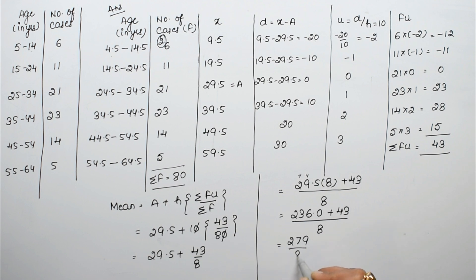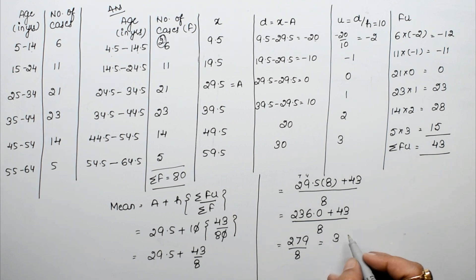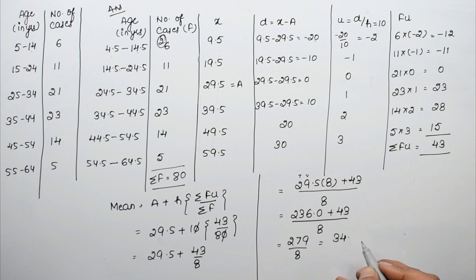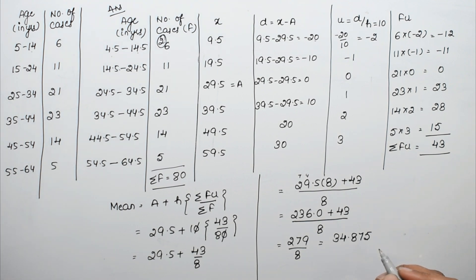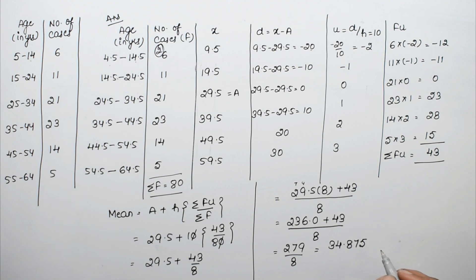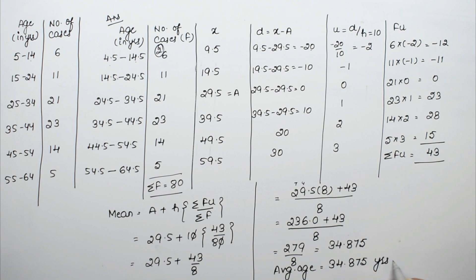Dividing 279 by 8 gives 34.875. Therefore, the average age of the malaria patients is 34.875 years.